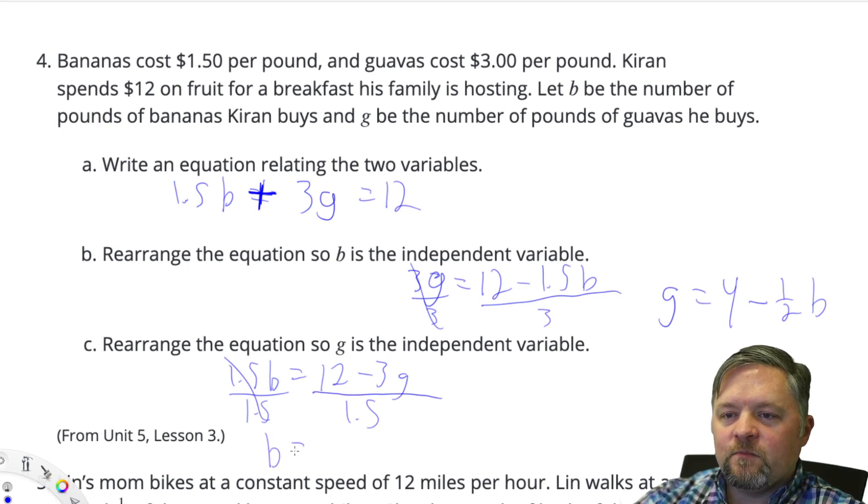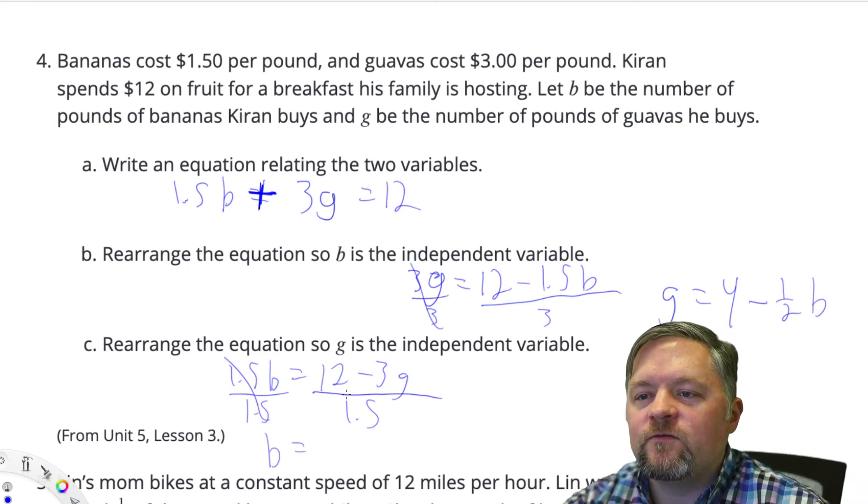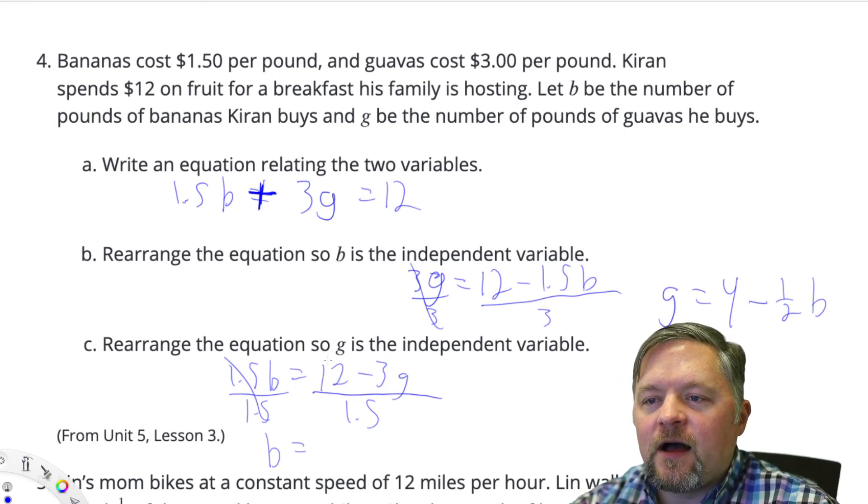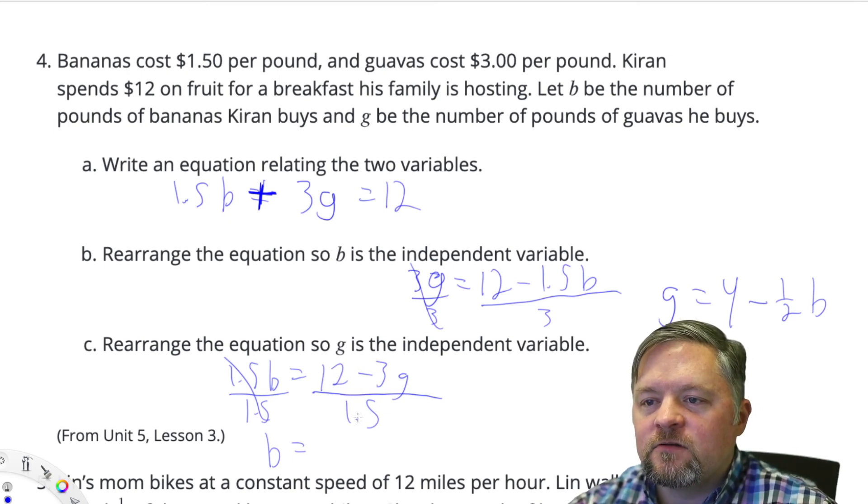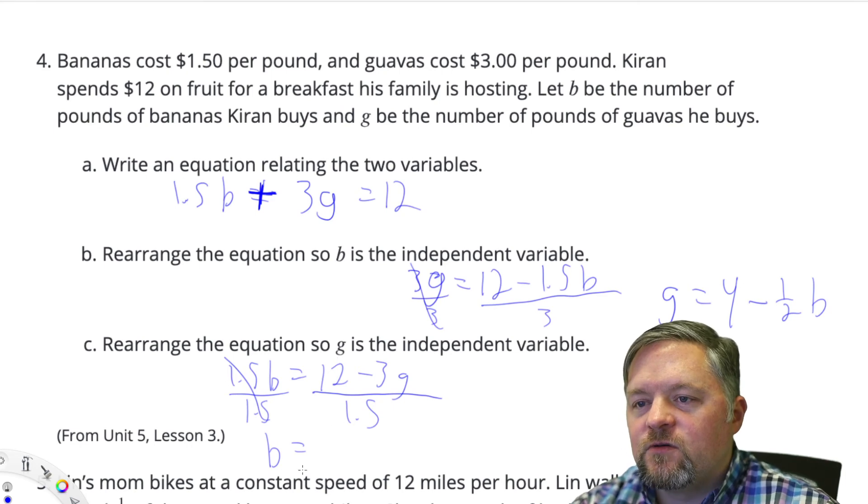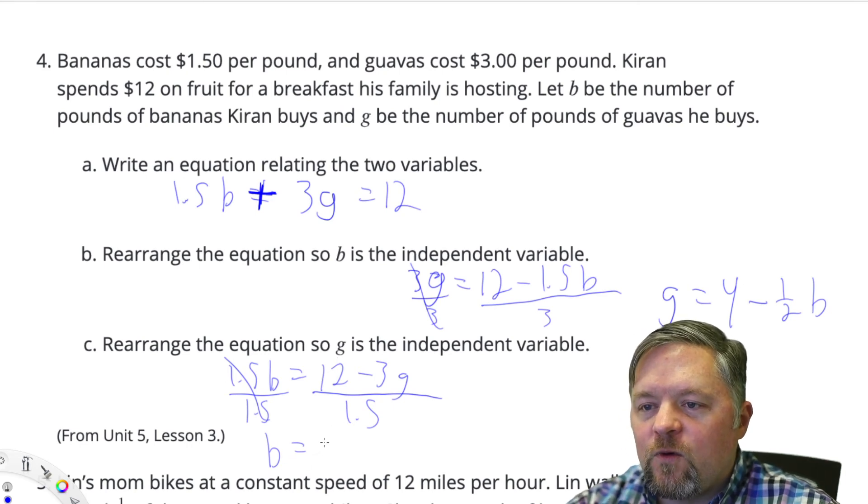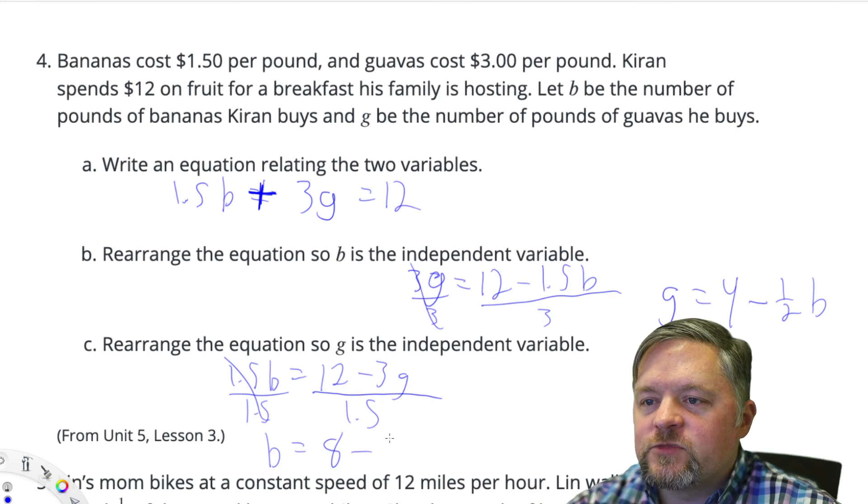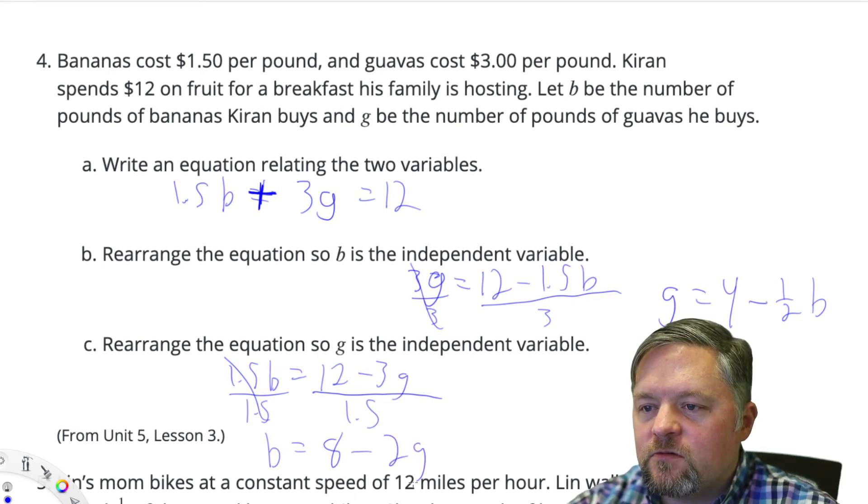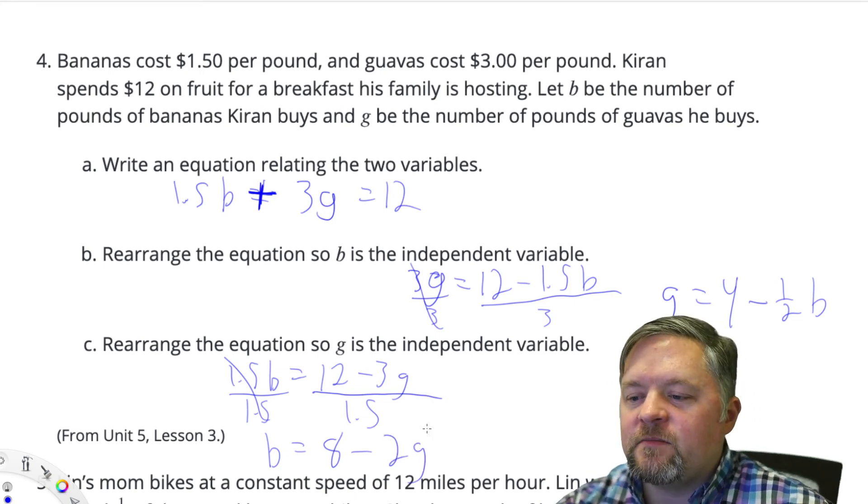Now I'm going to get that 1.5 to go away. Divide by 1.5, do it to that side, I have to do it to this side. Now b equals, what is 12 divided by 1.5? Well, dividing by a fraction means multiplying by the reciprocal. So 1.5 is 3 over 2. The reciprocal of that is 2 thirds. What is 2 thirds of 12? That is 8 minus 2g.